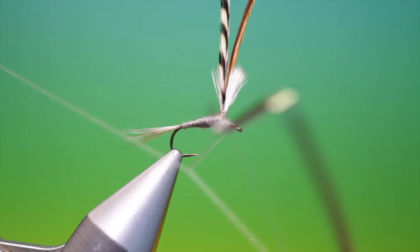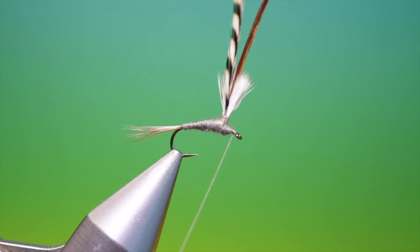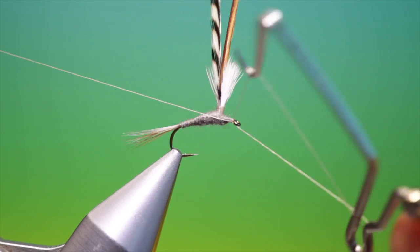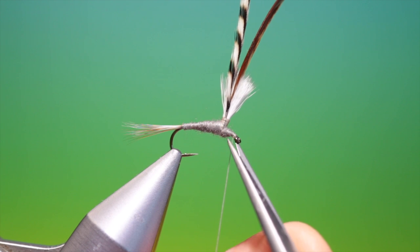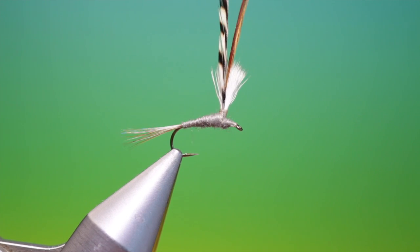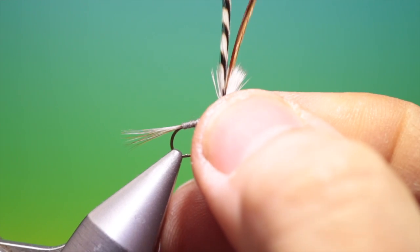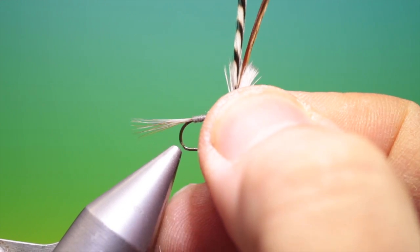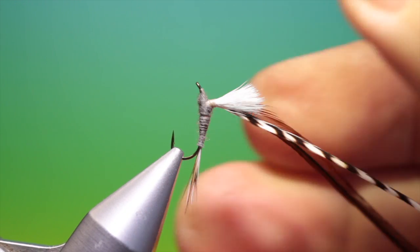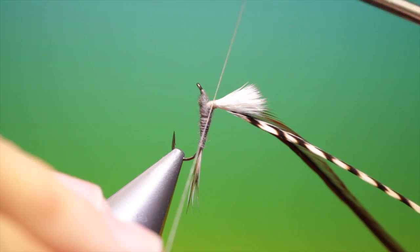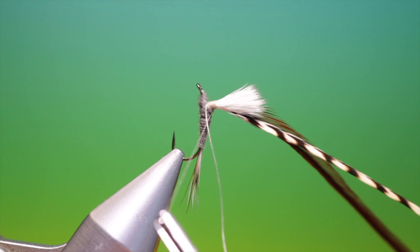Oops, sorry. And give that a whip finish there. Just give it one more. There we are. Remove our tying thread. And we'll spin the fly around. Like so. Take our tying thread and reattach it to the post.